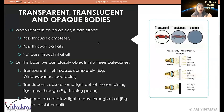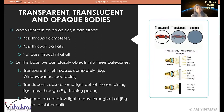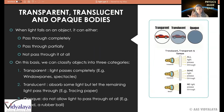Now let's look at three types of bodies: transparent bodies, translucent bodies, and opaque bodies. Every time light falls on an object, three things can happen: either the light passes through it completely, or it only passes partially, or it doesn't pass through at all. On the basis of this behavior, we classify objects into three types — transparent, translucent, and opaque.